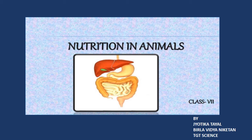The remaining food then enters the large intestine. It is a shorter and wider tube of about 1.5 meters in length. It has two main parts: the colon and the rectum. The colon is in the form of an inverted U, and the rectum is a small part that stores the undigested food. The undigested food is then expelled out from an opening called the anus.